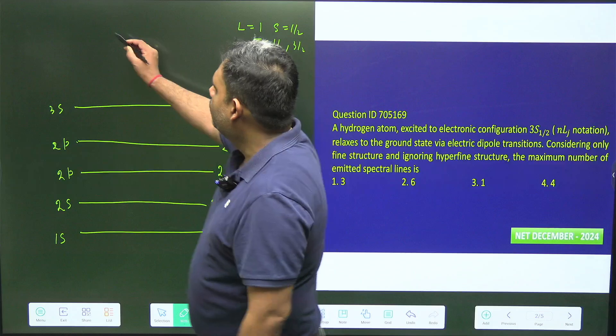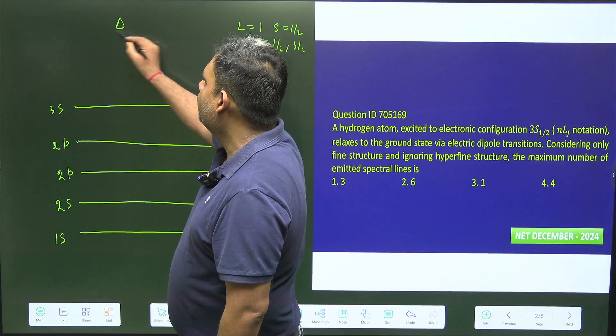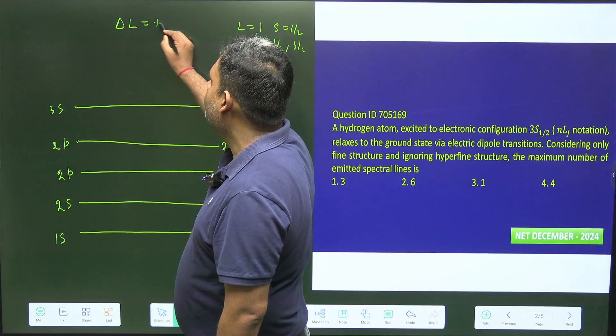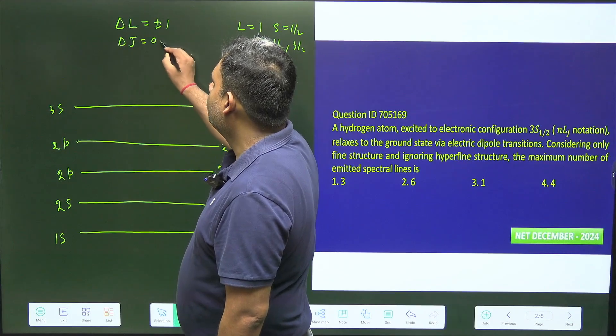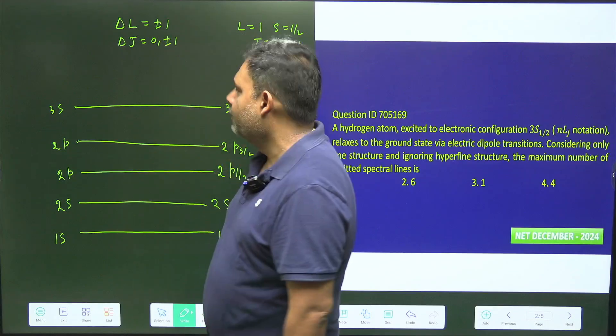Now students, what is the selection rule? It is very interesting. Delta l must be plus minus 1 and delta j must be 0 plus minus 1. This is our selection rule.